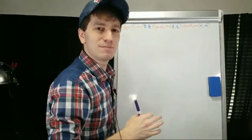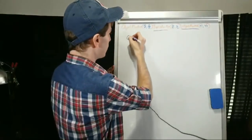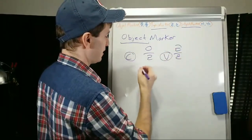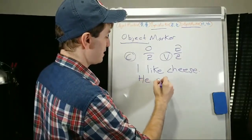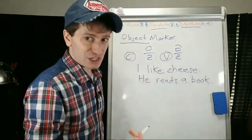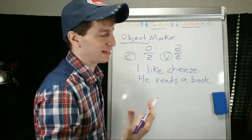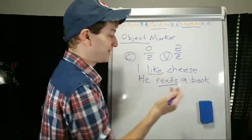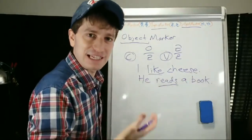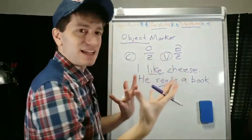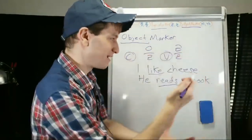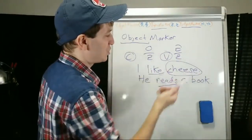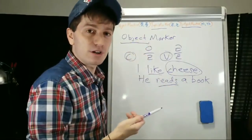You can drop these three particles whenever the meaning is not vague. The object marker marks the object. In an English sentence, you might have 'I like cheese' or 'He reads a book.' Anytime you have an action verb — any verb that does anything, like 'like' or 'read' — many action verbs can do something to something. You can like cheese, like Korea, like K-pop, or read the newspaper. If the action verb can affect something, whatever that verb is doing something to is considered an object. Like is a verb and cheese is an object — that is what the object marker is for in Korean.